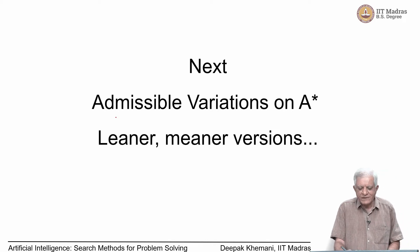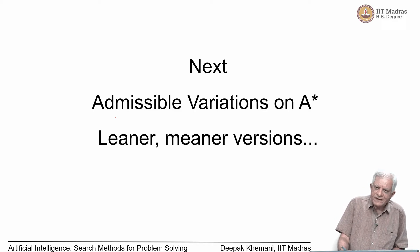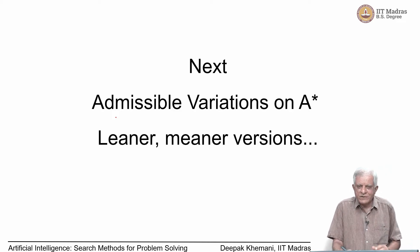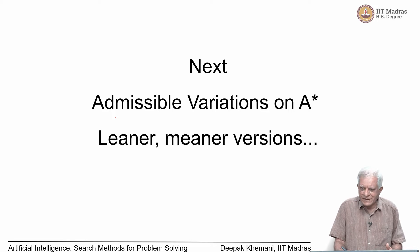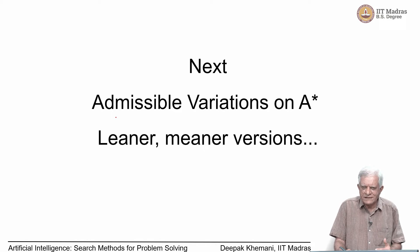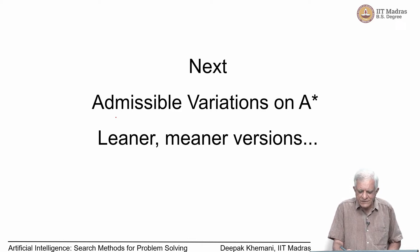Continuing our study of the A* algorithm, there has been interest in finding variations of A* where the space requirement is lower, but at the expense of time — because you cannot have a free lunch. We want to maintain the admissibility of the algorithms; we are still interested in the optimal path, willing to spend more time and use less space, so that we can solve larger problems in terms of the state space. Let us look at some leaner versions of A*.